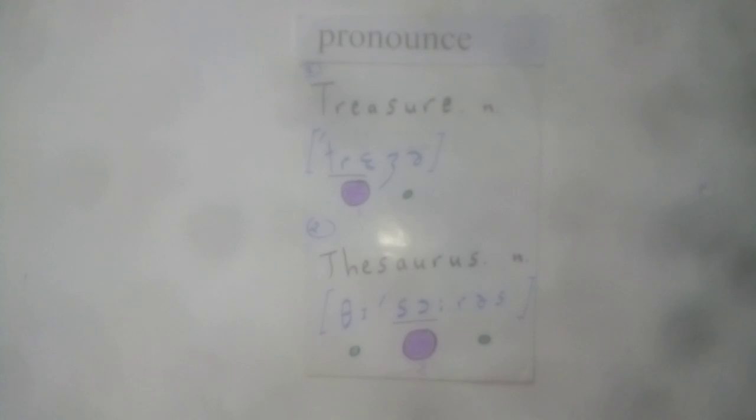is thesaurus. Treasure has two syllables. The first syllable 'trea' - that's the stressed syllable within this word. Therefore, we say treasure. We put the stress on the first syllable, not the second. We don't say treasure, we say treasure.